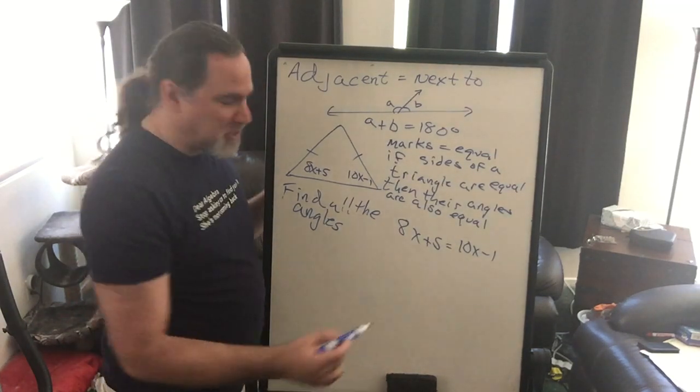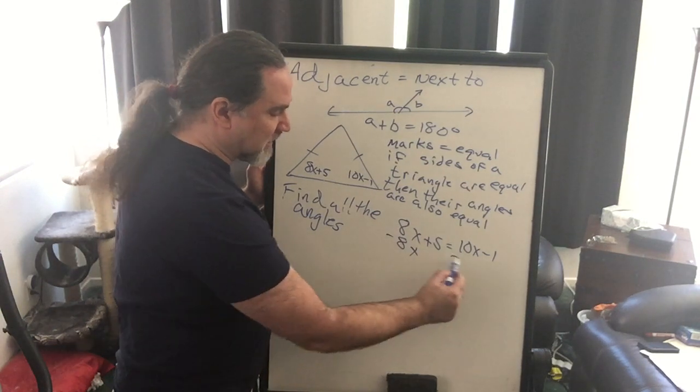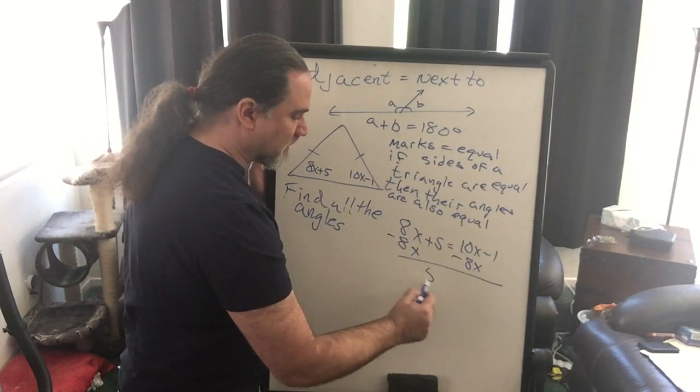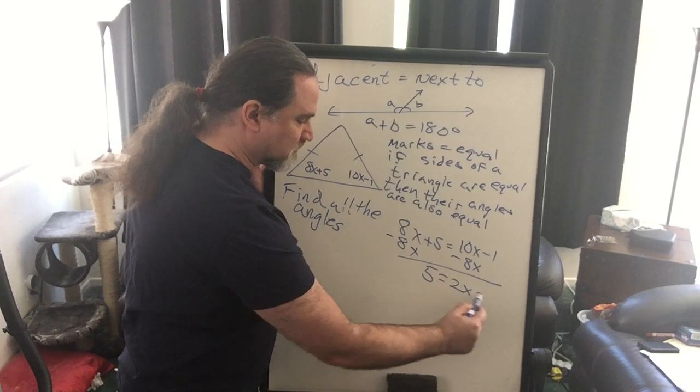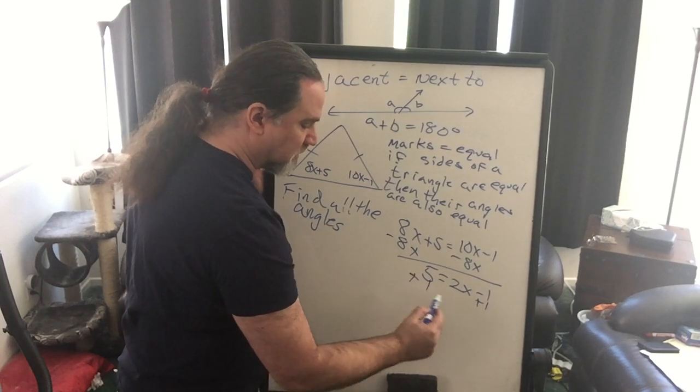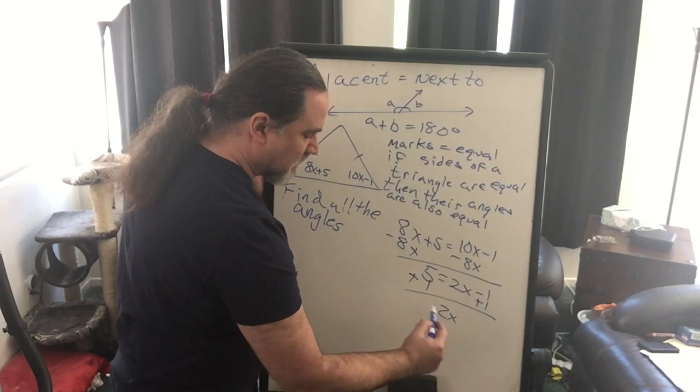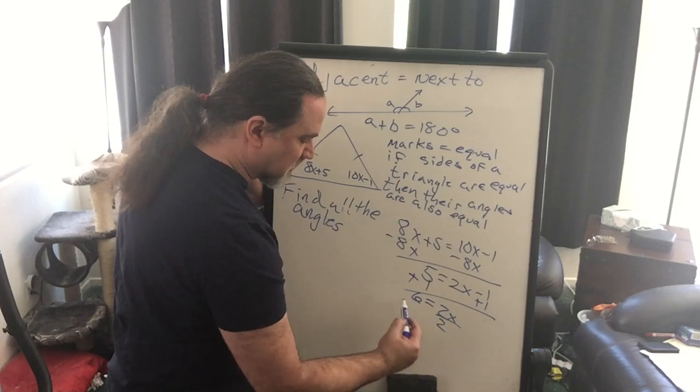We're going to solve this equation. We're going to subtract the 8x from both sides. We get 5 equaling 2x minus 1. We're going to add the 1 to both sides, we're going to divide both sides by 2.